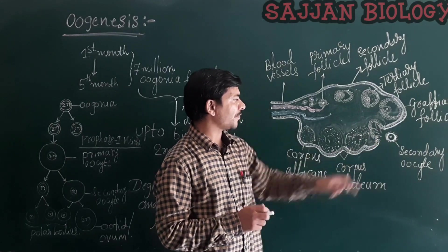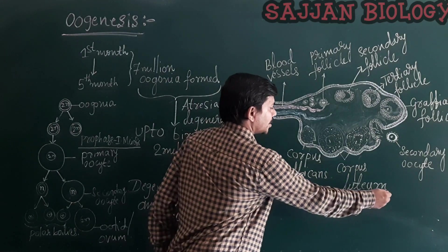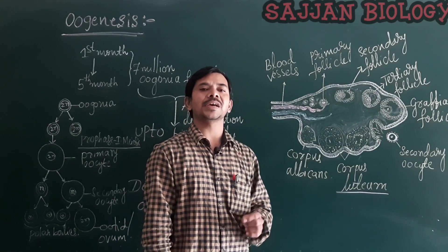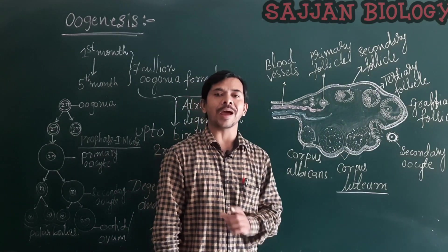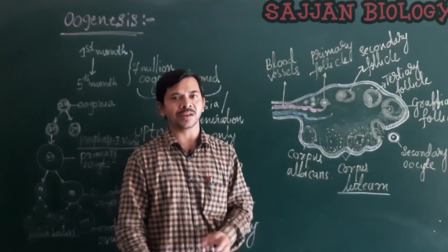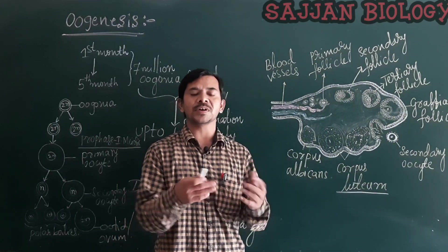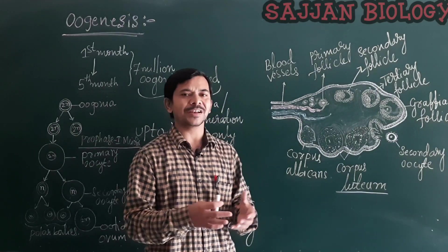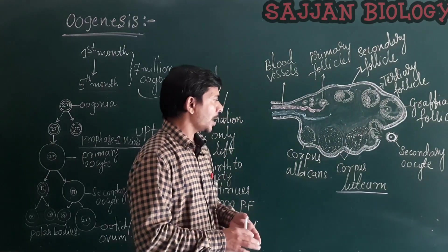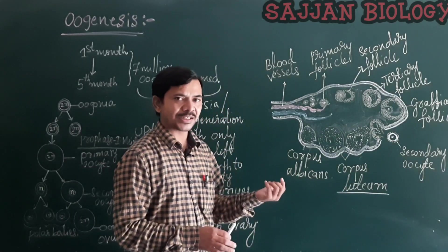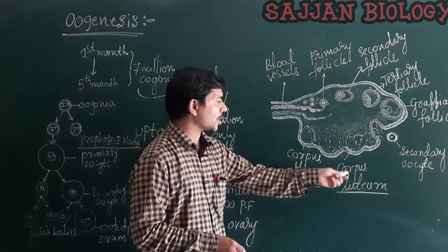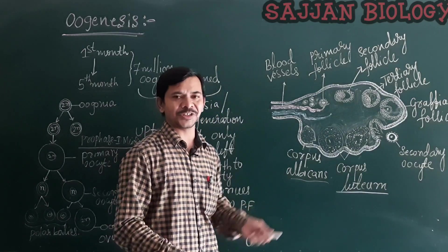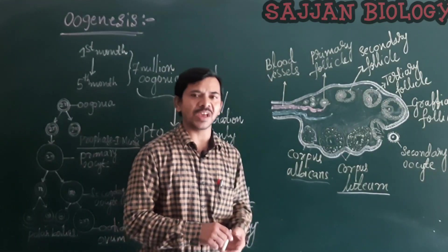Once the secondary oocyte is released, the remaining follicle is converted into the corpus luteum. The corpus luteum is a temporary endocrine gland responsible for secretion of progesterone, the pregnancy hormone. If no fertilization takes place, the corpus luteum is converted into the corpus albicans and later degenerates, losing its function.